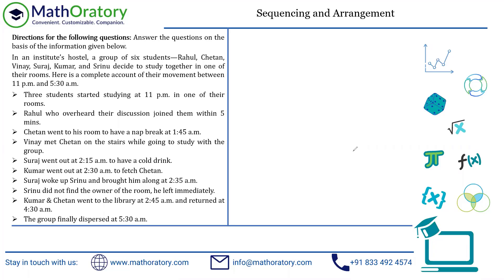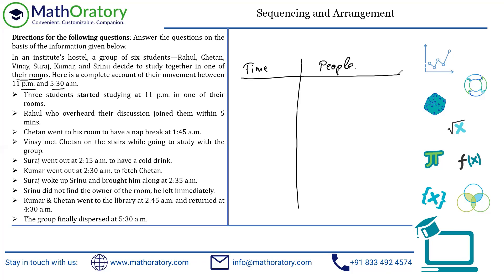In this LR set, we have a group of six students. The names have been provided, and they're deciding to study together in one of their rooms. Here is a complete account of the movement between 11pm and 5:30am. If you quickly glance through the given information, it's about entering the room and exiting the room. What I would like to do is build up a table — a rough structure I'm going to develop.